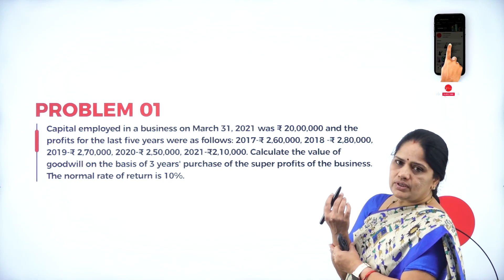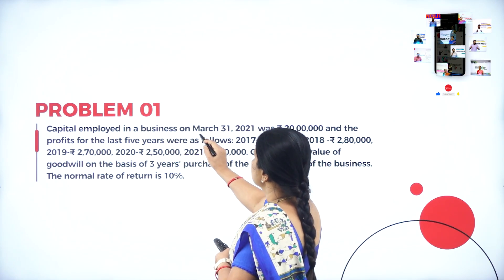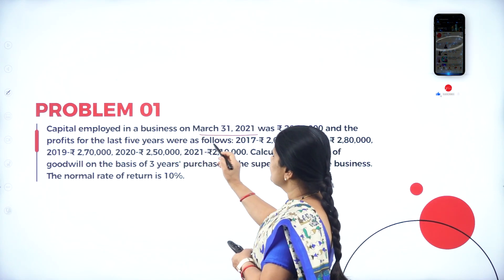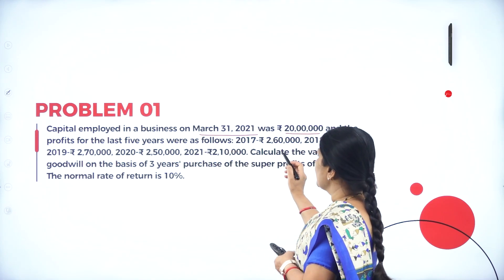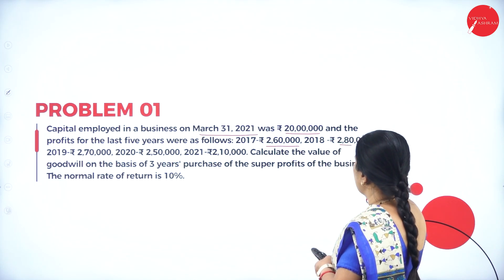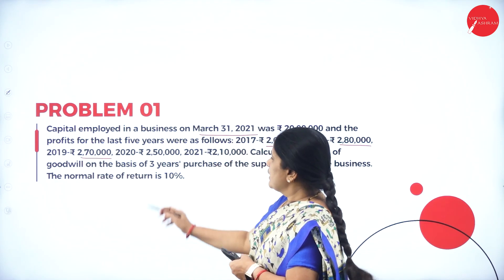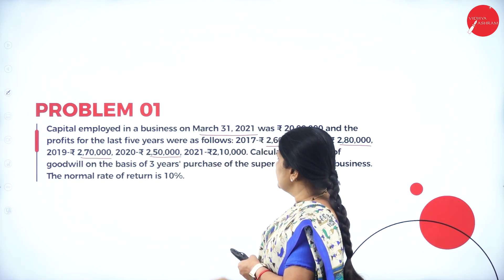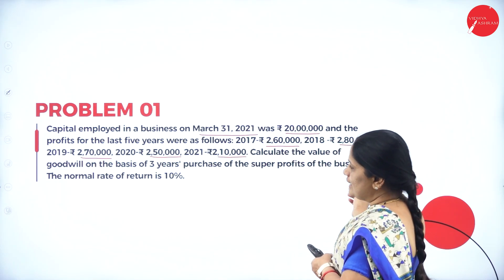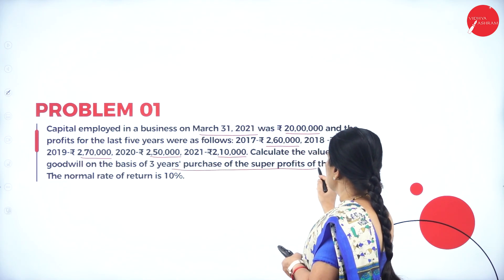Problem one: Capital employed in a business on March 31st 2021 was 20 lakhs, and the profits for the last five years were as follows — 2017: 2 lakh 60,000; 2018: 2 lakh 80,000; 2019: 2 lakh 70,000; 2020: 2 lakh 50,000; 2021: 2 lakh 10,000. Calculate the value of goodwill on the basis of three years of super profits.